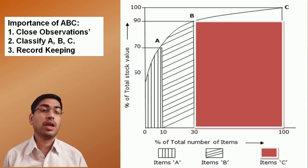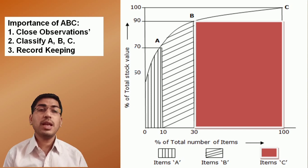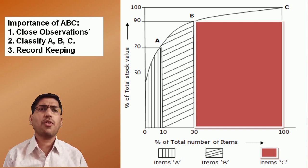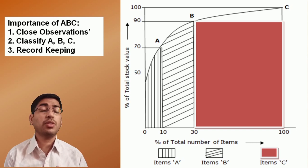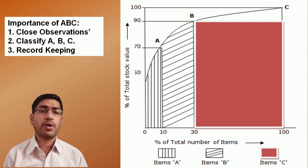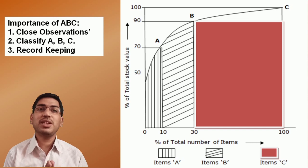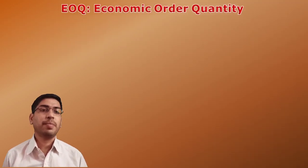Regarding record keeping: for item A, we maintain full record keeping — even a single number that is dismissed is recorded. For item B, we maintain a moderate type of record keeping. And for item C, no record keeping is needed.